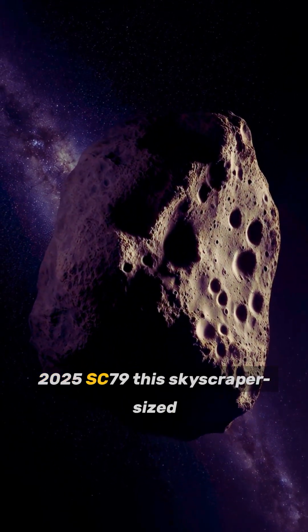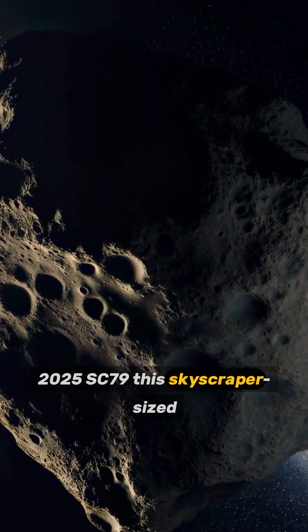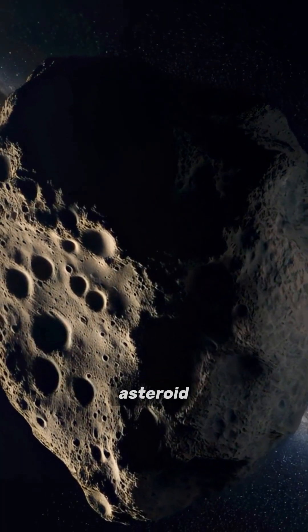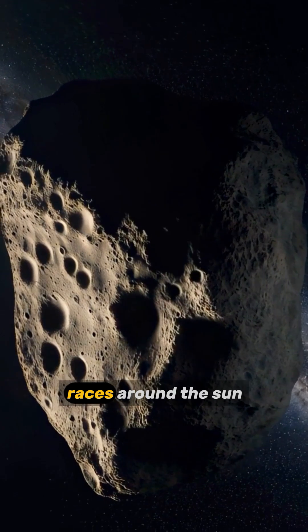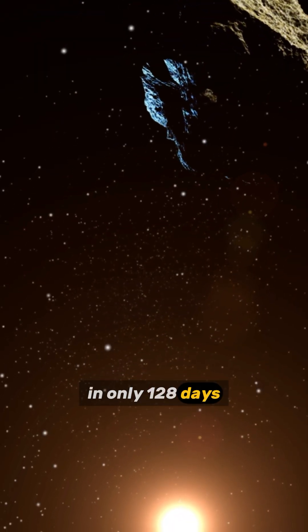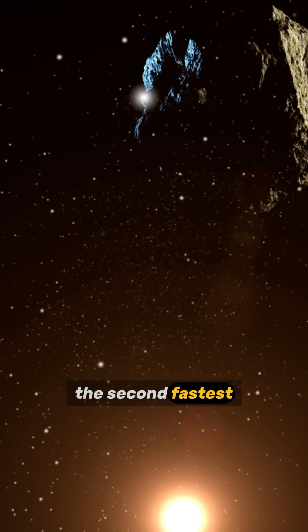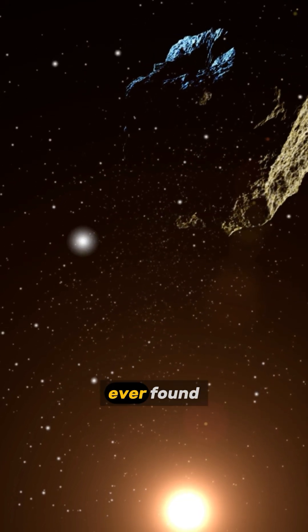2025 SC-79. This skyscraper-sized asteroid, 700 meters long, races around the sun in only 128 days. That makes it the second fastest unique asteroid orbit ever found.